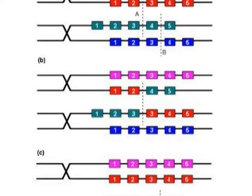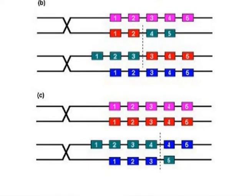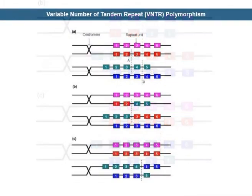The strand then breaks on sister chromatids along line B and also produces different repeats. In this case, it is called sister chromatid exchange. Figure 7 shows the variable number of tandem repeat polymorphism.